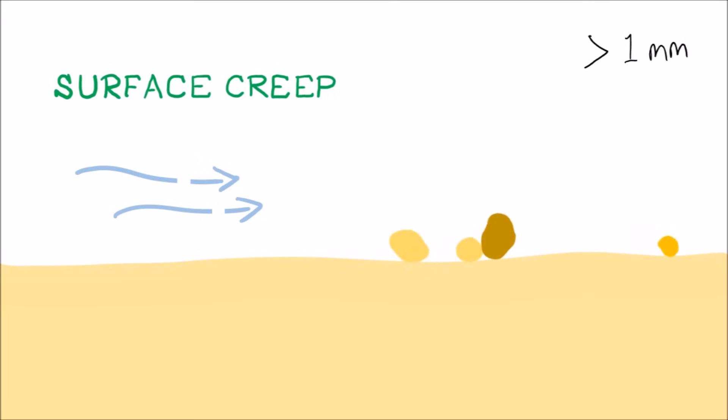Surface creep involves larger particles that are too heavy to be lifted by the wind, those bigger than 1 millimeter in diameter. They are pushed and rolled along the ground and they contribute to the formation of sand dunes.